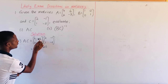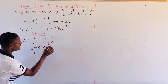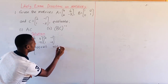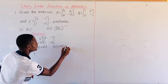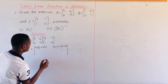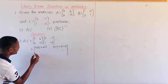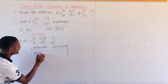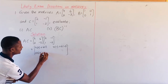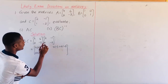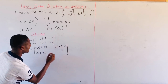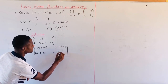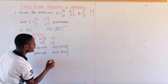Then row by the next column will give us 4 times negative 1 plus 6 times negative 2. Row by column will give us 2 times 2 plus negative 3 times 1. Then row by the last column will be 2 times negative 1 plus negative 3 times negative 2.